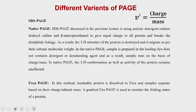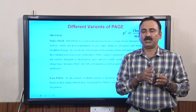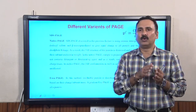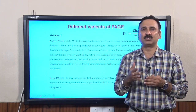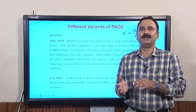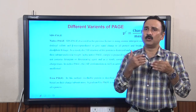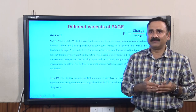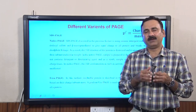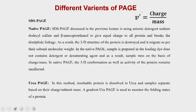Apart from SDS-PAGE, there are different variants of polyacrylamide gel electrophoresis. In SDS-PAGE, which we discussed in the previous two lectures, we use SDS as a denaturing agent along with beta-mercaptoethanol. Both destroy the three-dimensional structure of the protein, and beta-mercaptoethanol also breaks disulfide linkages. The SDS also provides a negative charge to the protein, so electrophoretic mobility is directly proportional to charge divided by mass.